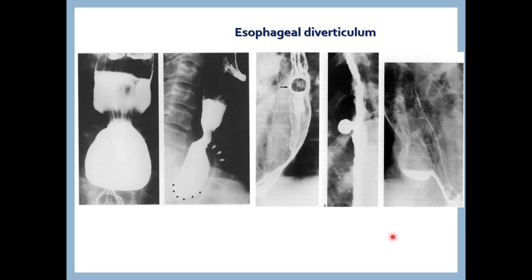Another pathology: we see the esophagus with the cervical vertebrae — barium swallow showing outpouching of the esophageal wall, called esophageal diverticulum. Full comment: barium swallow (contrast swallow) showing esophageal diverticulum.